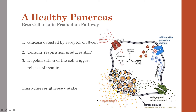The insulin-containing vesicles are released into the bloodstream to regulate glucose uptake. Just a quick recap: glucose is detected by a receptor on the beta cell, cellular respiration produces ATP, which then triggers the depolarization of the cell, and leads to the release of insulin.